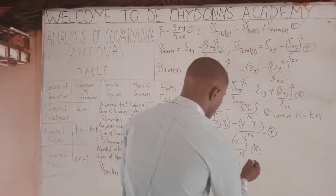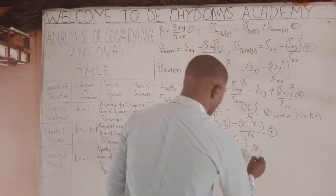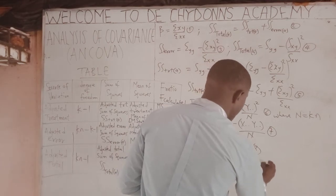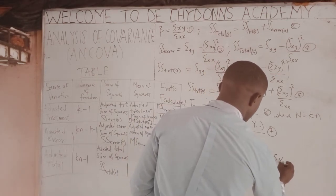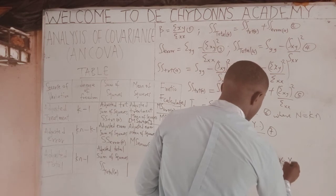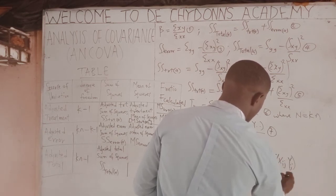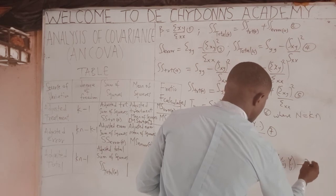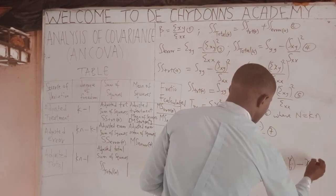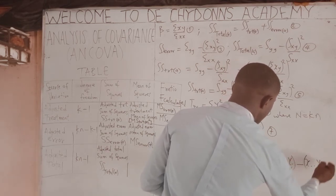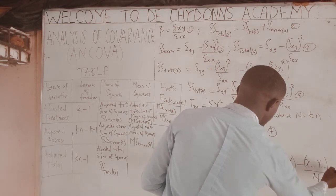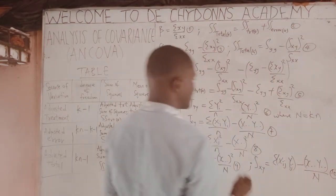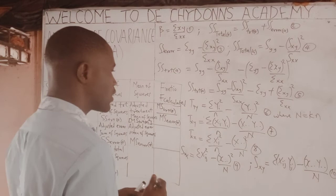Continuing with equation nine and ten: SSxy equals the summation involving xij times yij, minus the mean of x times mean of y, all over n. This is formula ten.